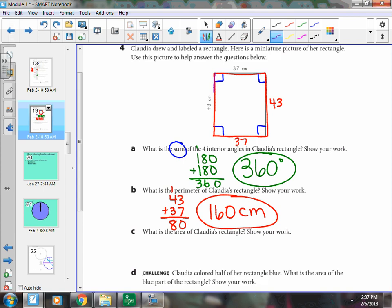But to find the area, you would do 43 times 37, and that would tell you the area or how much space is on the inside. If you're thinking of a horse pasture, think how much grass is on the inside.